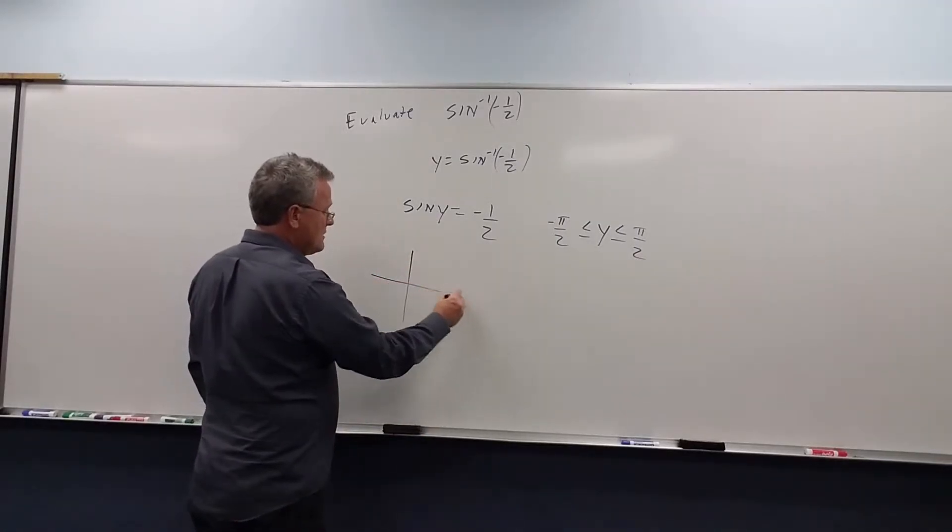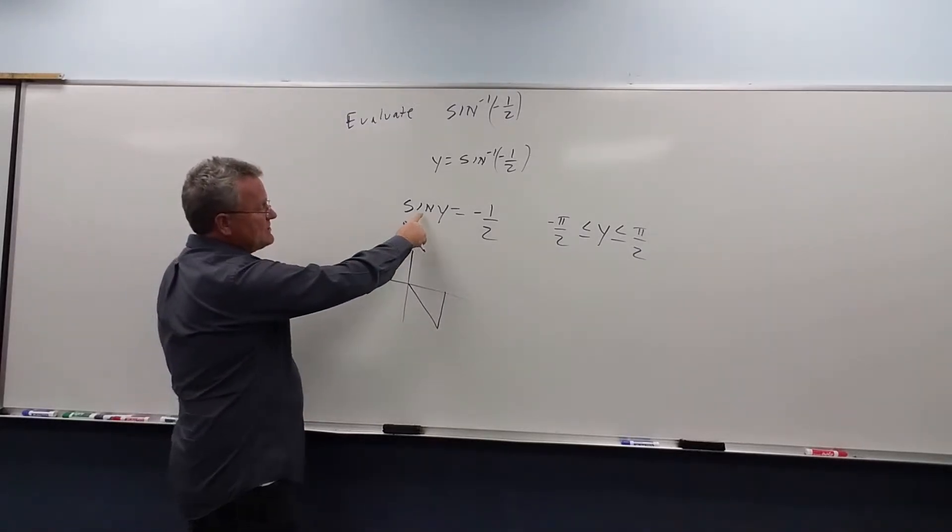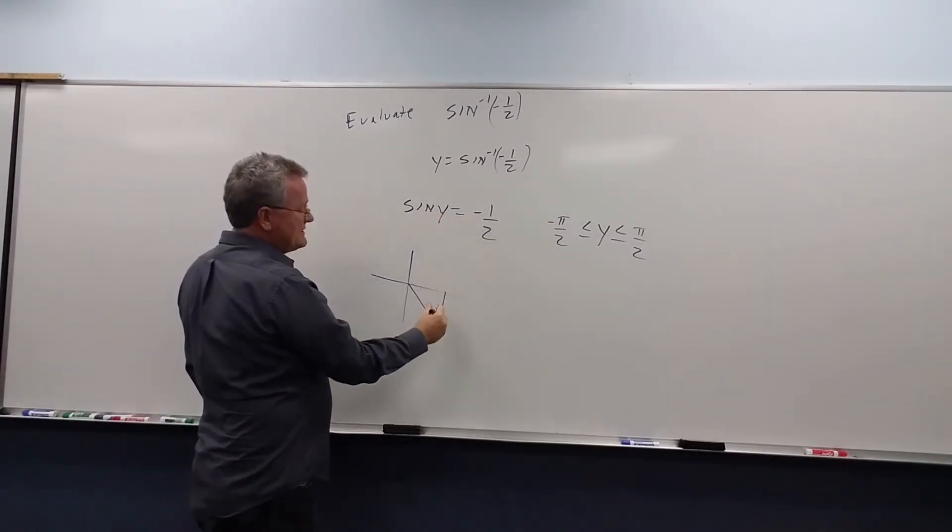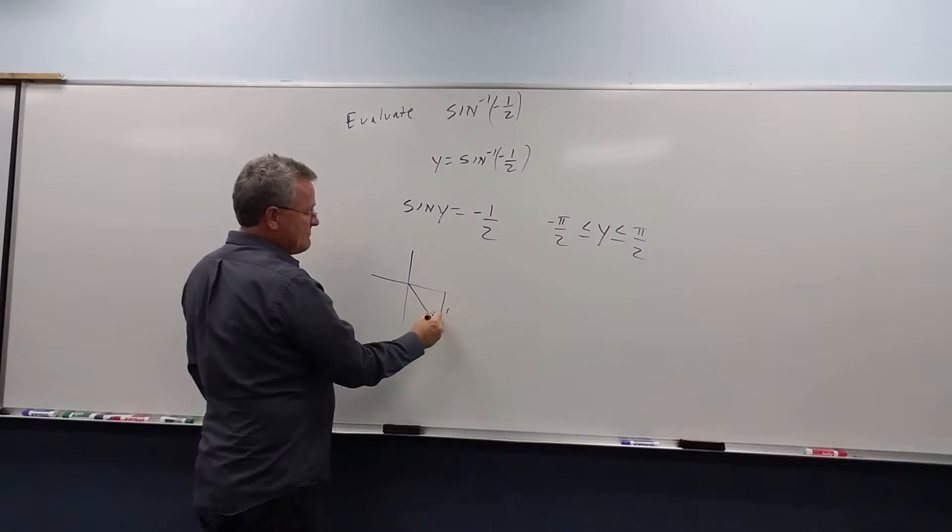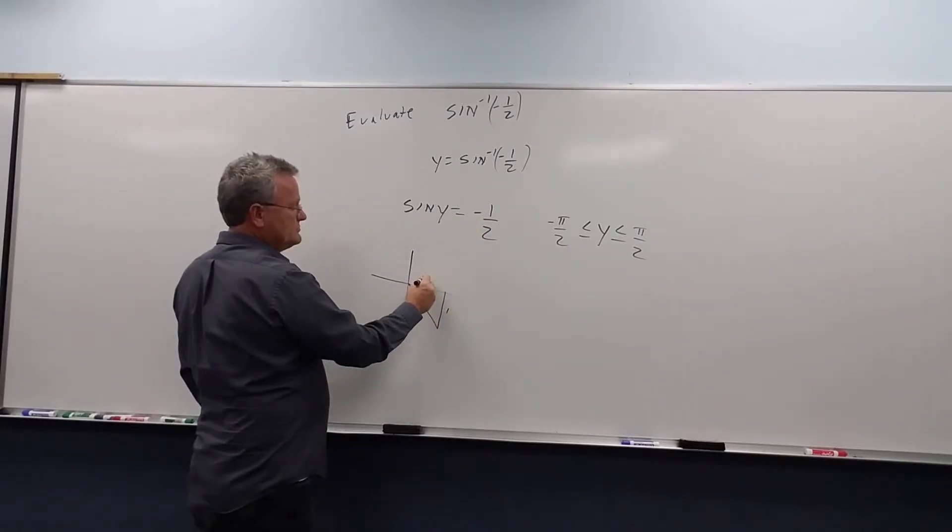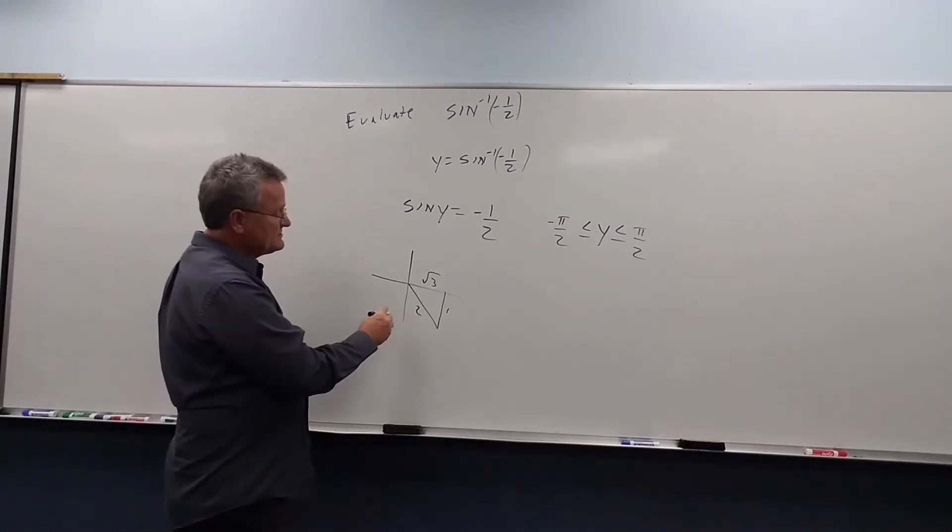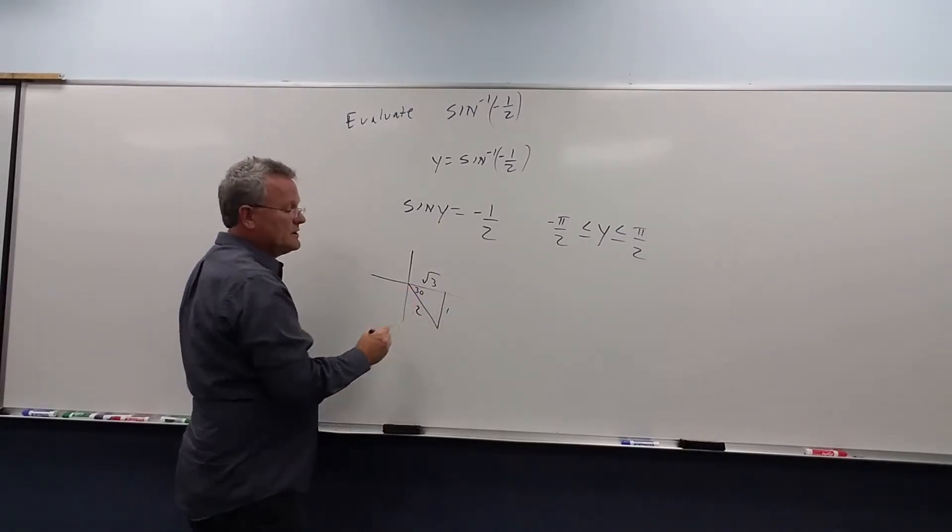So therefore we draw a triangle in the fourth quadrant. To evaluate this, the sine of y is... sine is opposite over hypotenuse. And we get the 1, 2, √3 triangle.